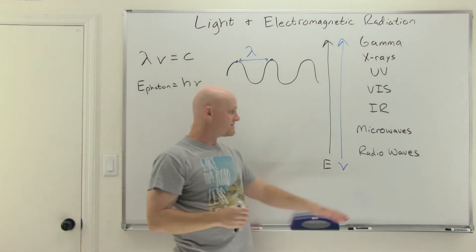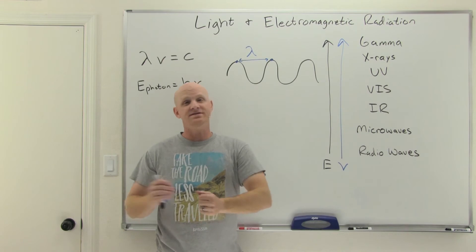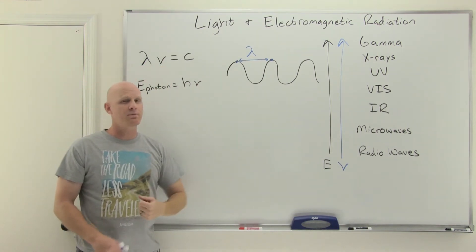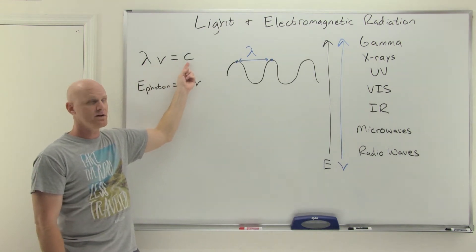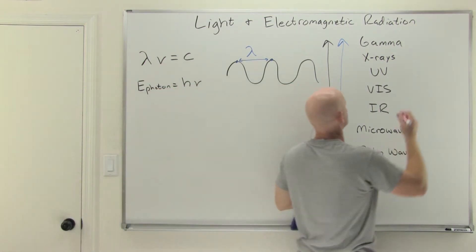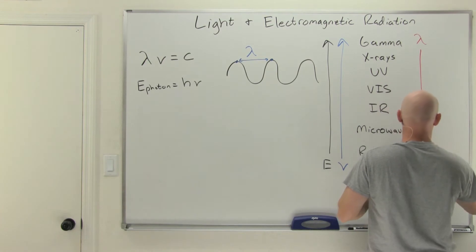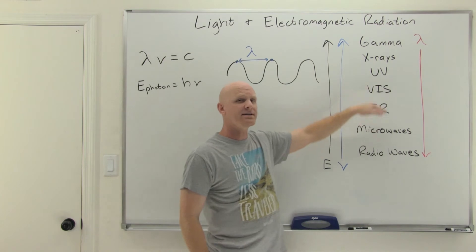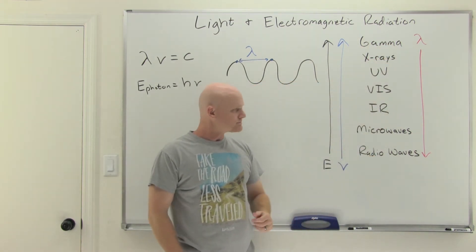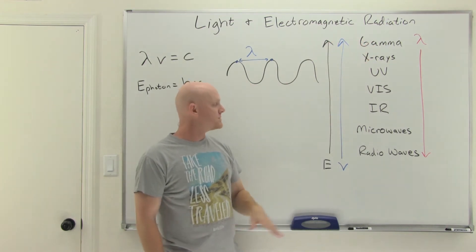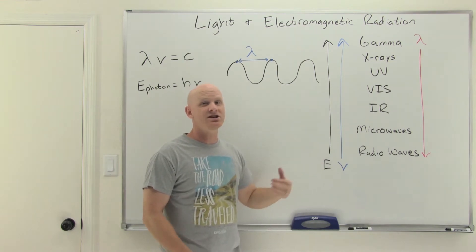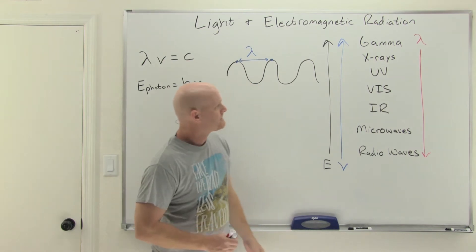So instead of asking which has the highest energy, we can also ask which has the highest frequency — it would be the same answer because they are directly proportional. However, wavelength and frequency are inversely proportional. They multiply together to give a constant — the speed of light. So if wavelength goes up, frequency must go down. This means wavelength increases going the opposite direction. If I gave you any five parts of the EM spectrum and asked which has the longest wavelength, you'd pick the one lowest on the list.